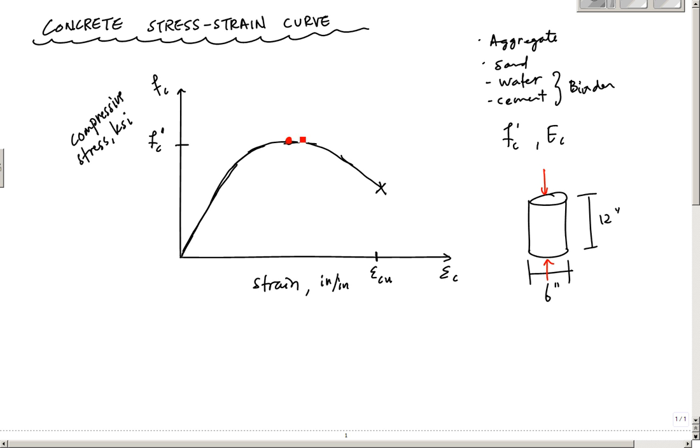FC prime is the specified compressive strength that's typically used in design, and that you'll use in what's called the ACI, the American Concrete Institute's 318 Building Code, where you design your structures and things. This peak value occurs at a strain typically for most concretes.